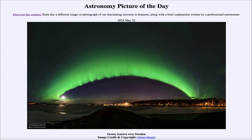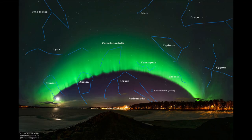Greetings and welcome to the Astronomy Picture of the Day podcast. Today's picture for May 22nd of 2024 is titled Aurora over Sweden. Here is an image from 2016 looking at the sky over Sweden, seeing a very strong band of the aurora stretching across the sky. This is a wide panoramic view looking at about half the sky, and we can see the arc of the aurora stretching there.